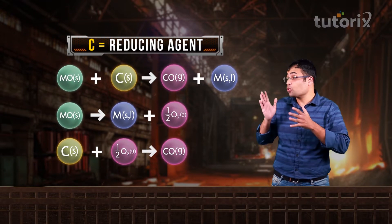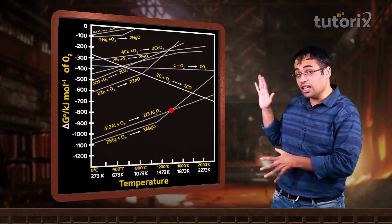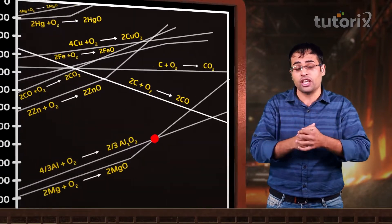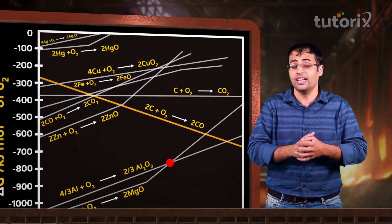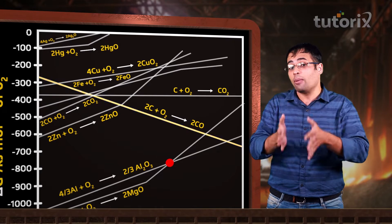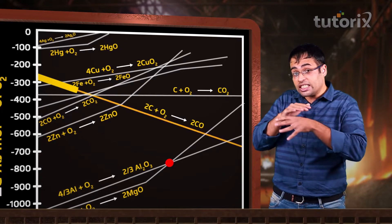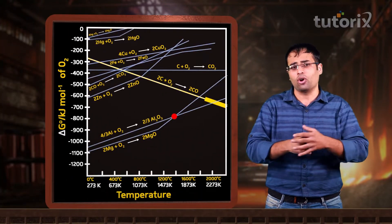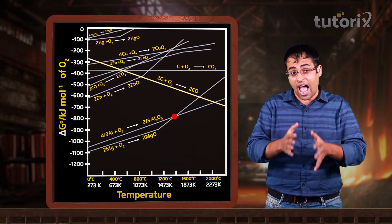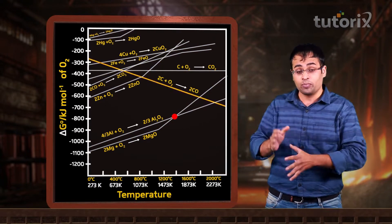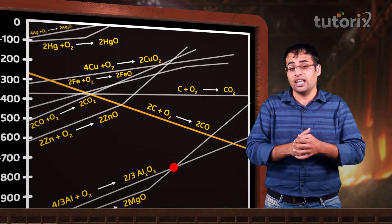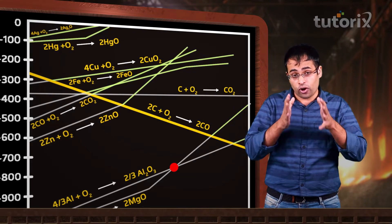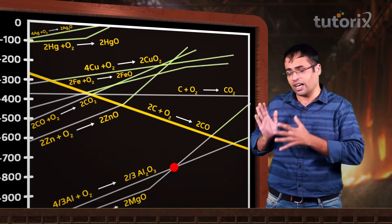To answer this question in detail, we have to bring back the Ellingham diagrams. In these Ellingham diagrams, I want all of you to focus your attention on the carbon to carbon monoxide line. You will notice that this carbon to carbon monoxide line slopes downwards with a steep negative slope, and in this process of sloping downwards, it crosses many metal oxide lines. According to a basic principle of Ellingham diagrams, the line which lies low in the diagram is capable of reducing all metal oxides lying above it. Therefore, carbon is a very good reducing agent for most metal oxides.